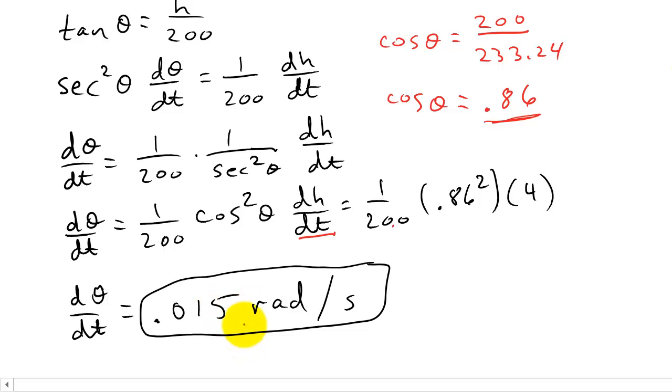And if you wanted to, you could convert that to degrees and get it in degrees per second. But I don't think it really matters. You can leave it in radians per second. All right, so that's this problem. And like I said, I've got three other examples of related rates. I hope you'll check those out, and if you like the videos, you can subscribe. Thanks.